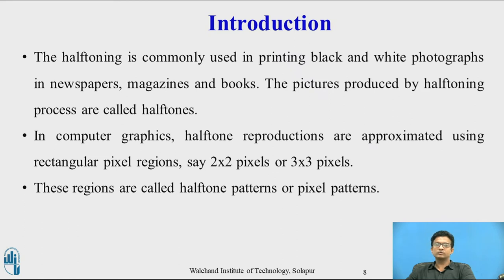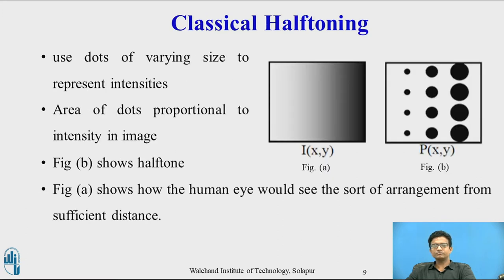Half-toning is commonly used in printing black and white photographs in newspapers, magazines, and books. Pictures produced by the half-toning process are called half-tones. In computer graphics, half-tone reproductions are approximated using rectangular pixel regions — say 2 by 2 pixels or 3 by 3 pixels. These regions are called half-tone patterns or pixel patterns. The figure shows dots of varying size to represent intensity, where the area of dots is proportional to the intensity in the image.